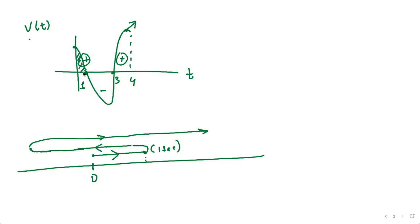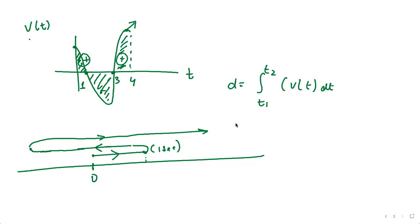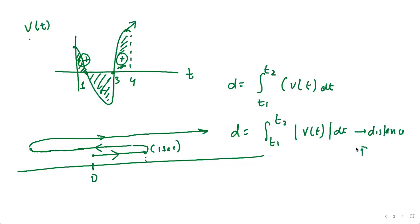The area under the velocity-time graph gives displacement. The integral from t1 to t2 of the velocity function gives displacement, while the integral of the absolute value of velocity from t1 to t2 gives the distance traveled. Assigning numeric values — say areas of 4, 6, and 3 for different intervals — allows us to distinguish between distance and displacement.